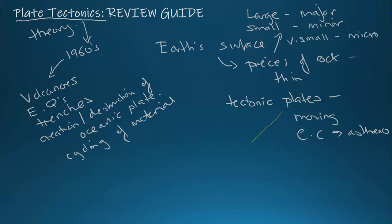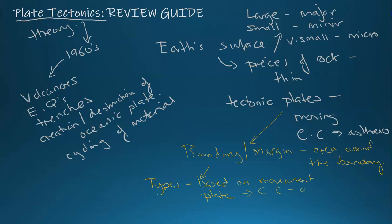Where these plates meet is called a boundary. Another word you can use is margin, but that's usually the area around the boundary. The boundary is where two plates meet. There are different types of boundaries based on the movement of the plate, which is initiated and produced by the convection currents in the asthenosphere.